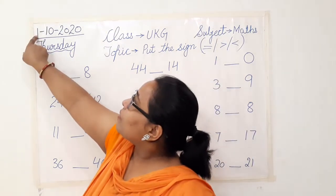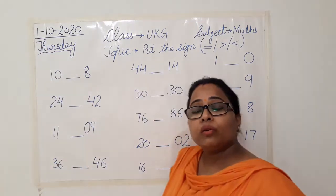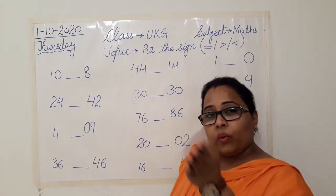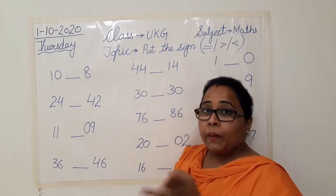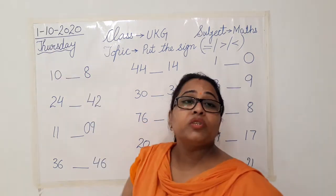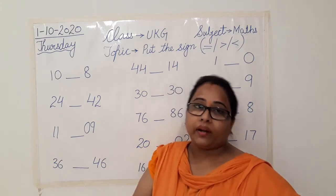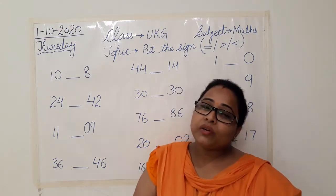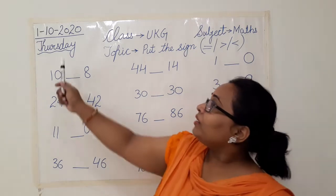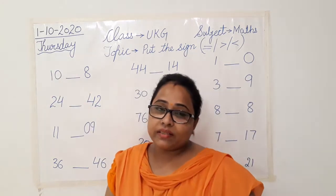We change this number every day because every day we are moving with a new day. But the month is changed once after 30 or 31 days. So today we have started with October month, and the day is Thursday. What is the day today? Thursday.